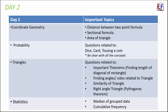In coordinate geometry, the important topics are the distance between two points formula, the section formula, and area of a triangle. Probability is another important lesson, and you often get questions related to dice, tossing a coin, cards, etc. A key trick for probability is that you must be clear with the concepts, because the question could be about dice or coin tossing — what matters is understanding the question and applying the correct concept. Probability is a lesson of understanding.